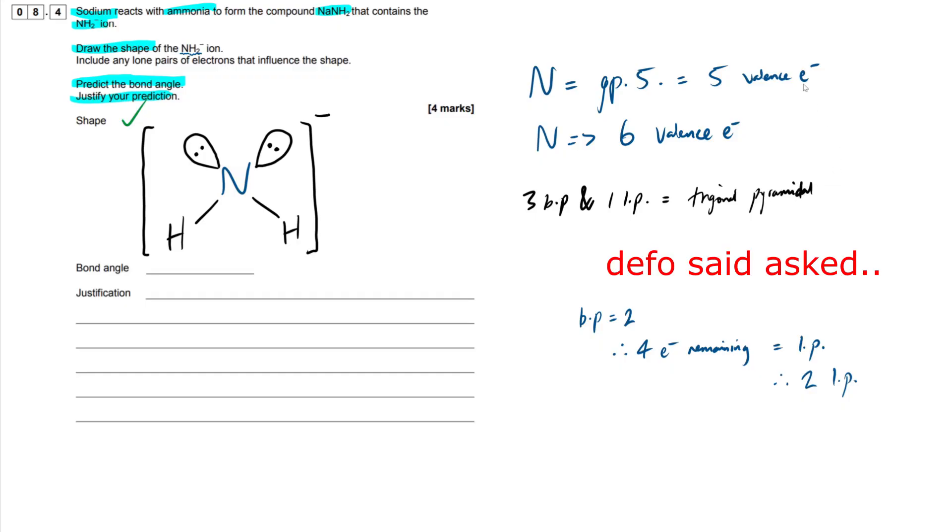Now, here they haven't asked us for the name of the shape, which is completely fine. But in other questions, they will most likely do that. So it's always good to memorize the shapes here. Trigonal pyramidal. An example, this guy right here using nitrogen again is going to be NH3, ammonia, classic ammonia. And this is going to have a bond angle of 107 degrees.